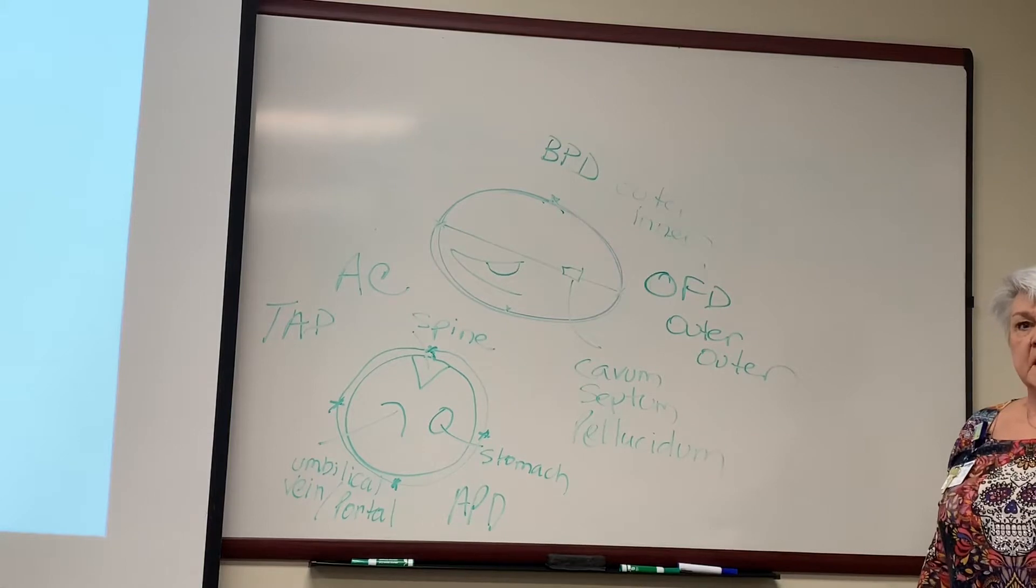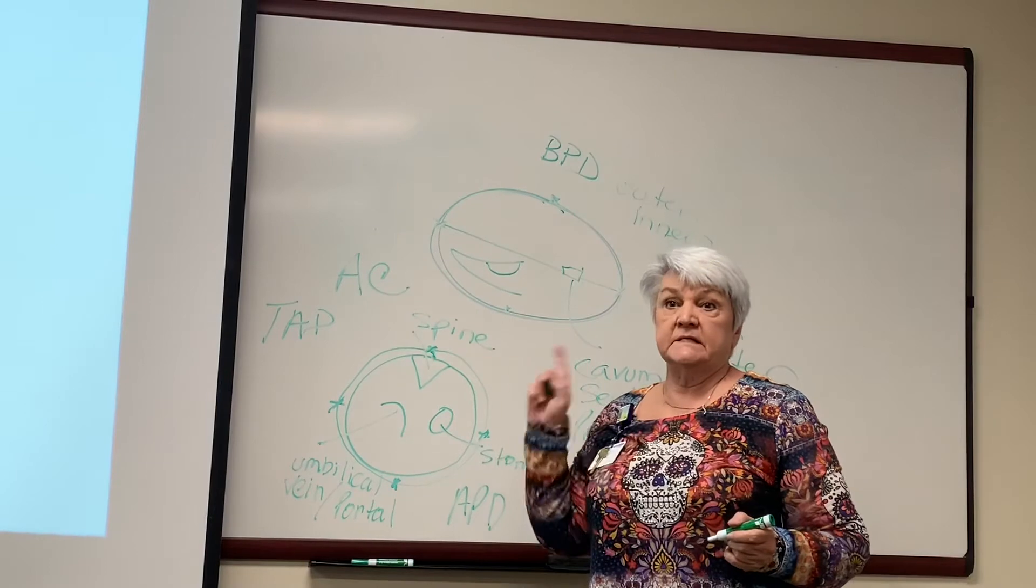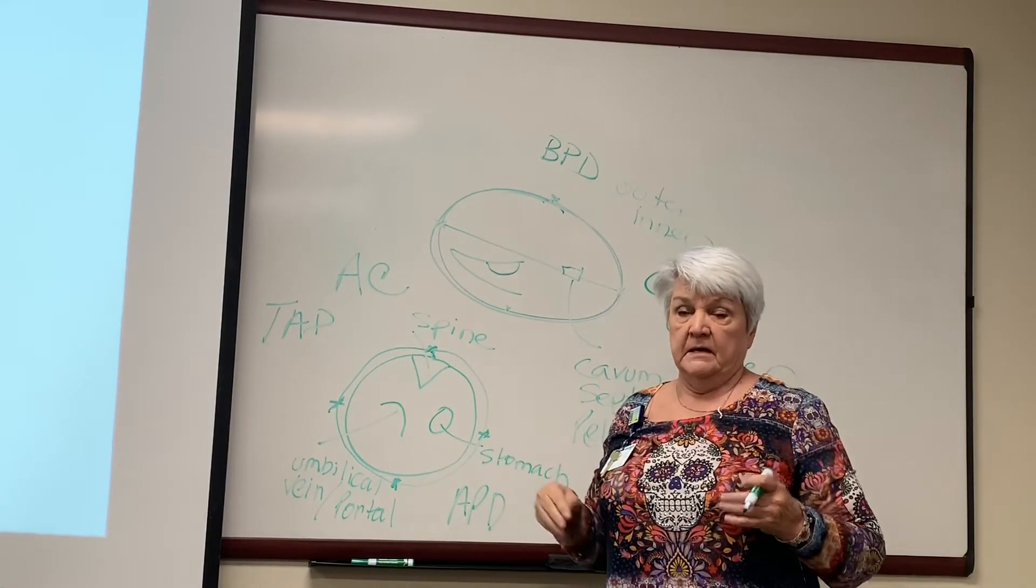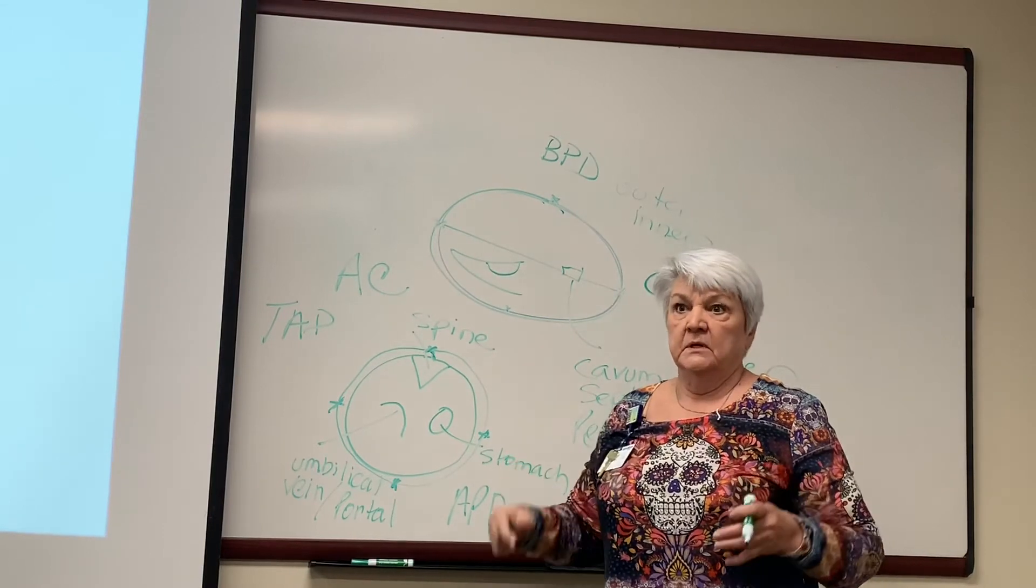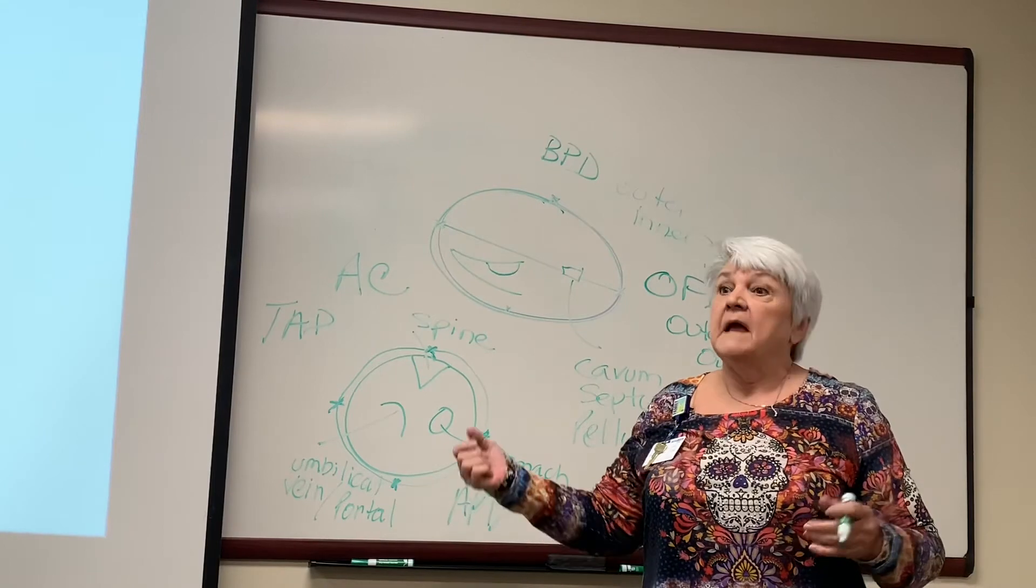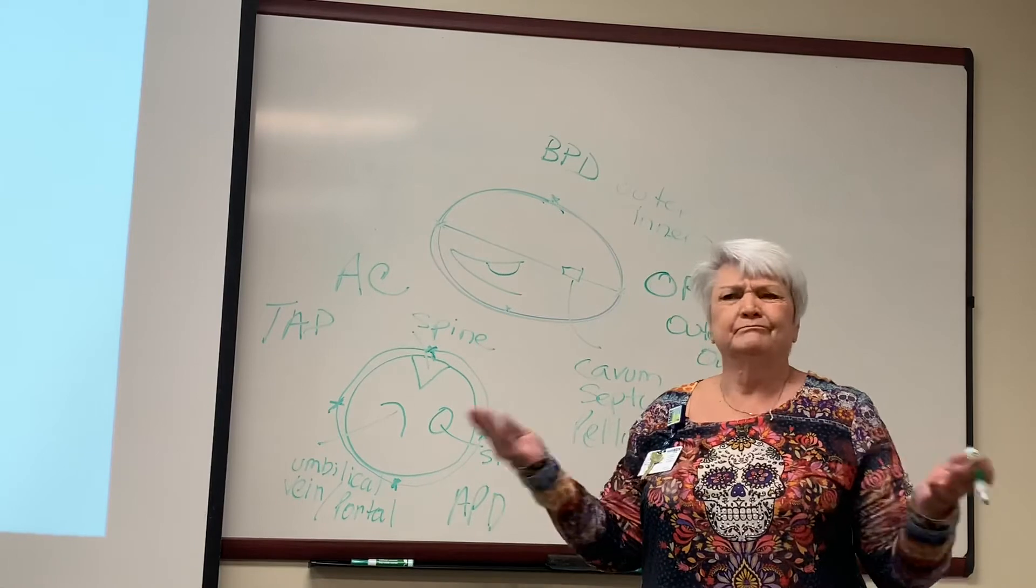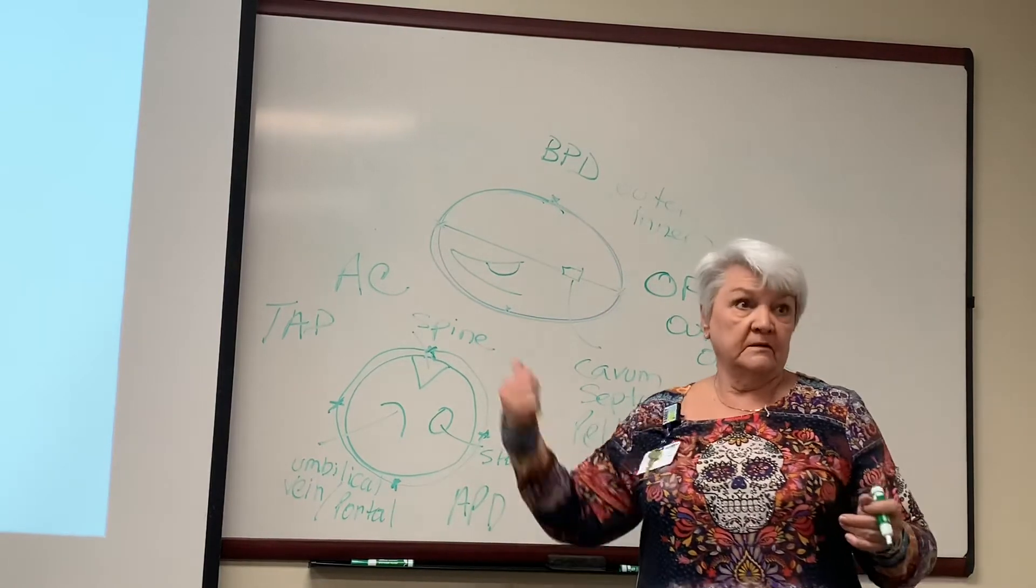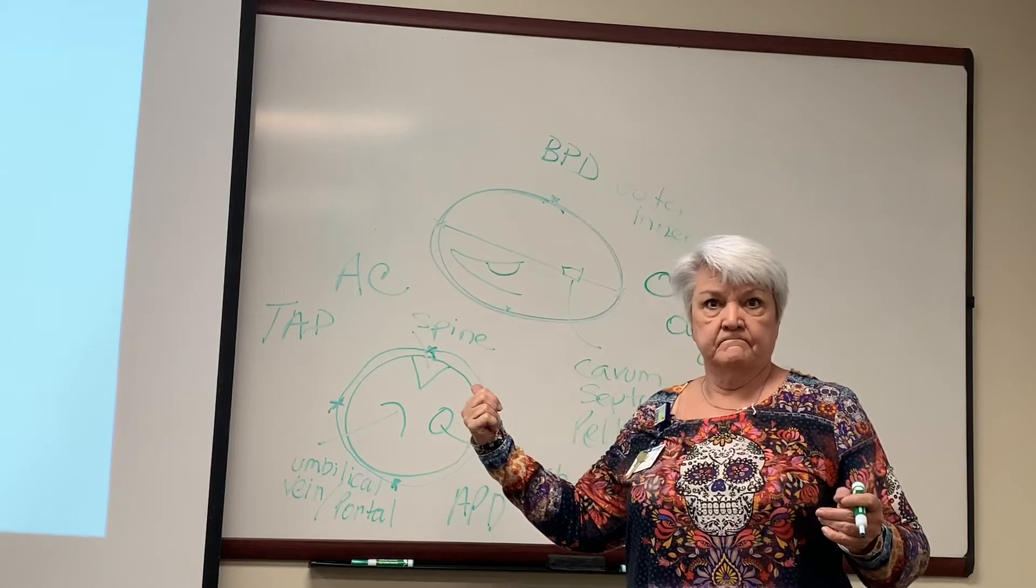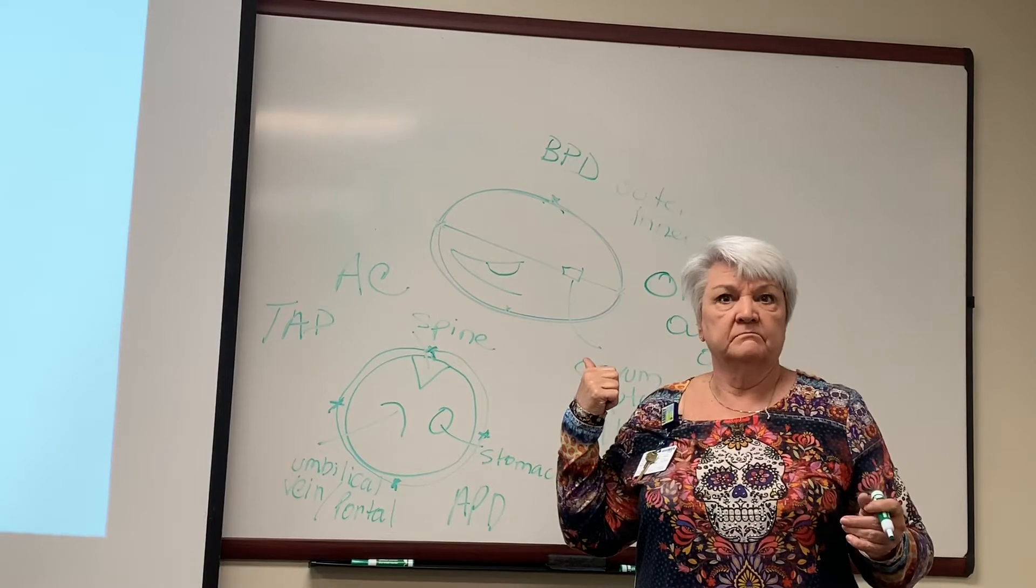Each time I measure one of these, I'm going to measure it three times. Let my machine do an average. That means I'm going to lift my hand. Am I hurting you? Is everything okay? Do you need to go to the bathroom? Are you warm enough? Just talk. Put your hand back down. Find it again. You never go by just one measurement.